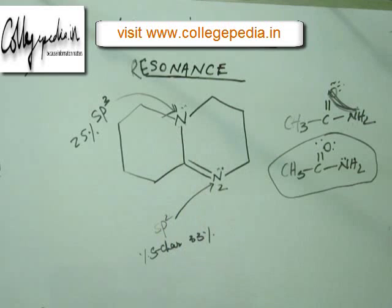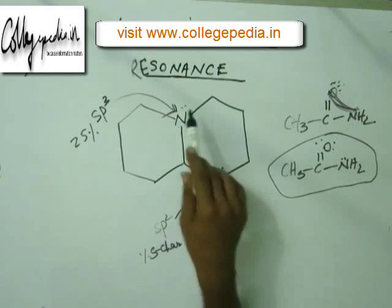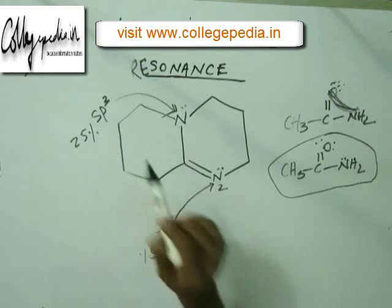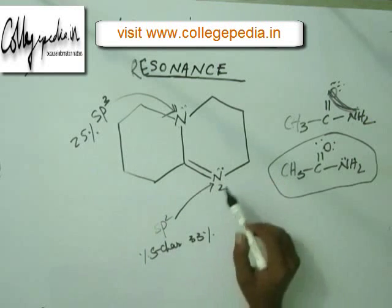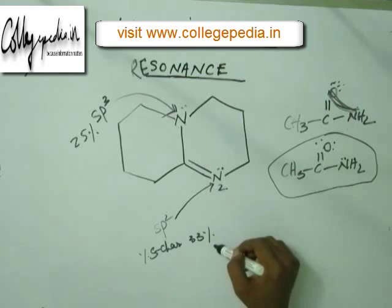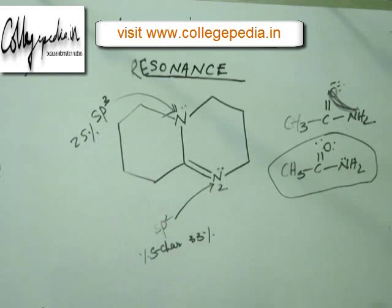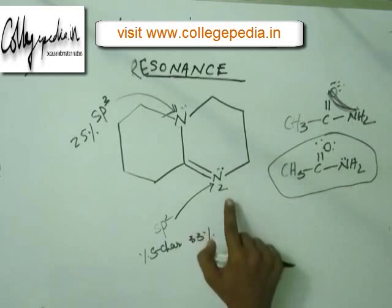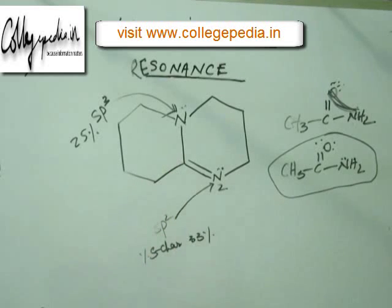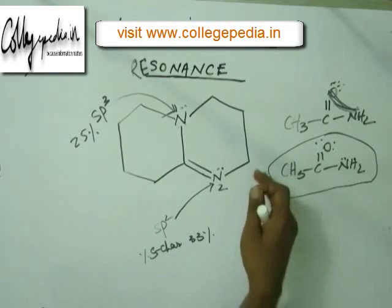Now, N2 is sp2 hybridized and N1 is sp3 hybridized — I am totally correct. N2 has 33% s-character and N1 has 25% s-character — totally correct. N2 is more electronegative than N1 — totally correct. But when I say N1 is more basic than N2 because N1 is less electronegative — there is where my error lies.